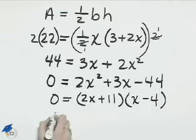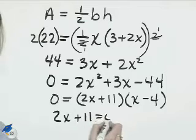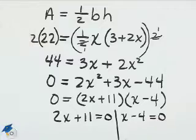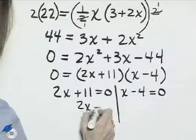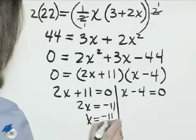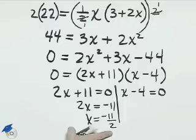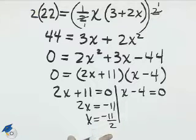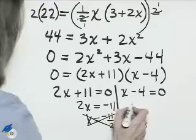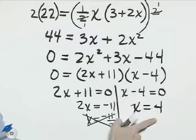Setting each of these factors equal to zero: 2x plus 11 equals 0, and x minus 4 equals 0. We'll have 2x equals negative 11, so x is negative 11 halves. This doesn't make sense because lengths of base and height can never be negative, so this answer will not work. Here we have x equals 4, which will work fine for this problem.